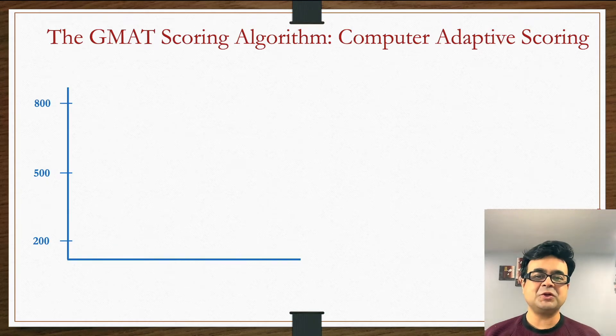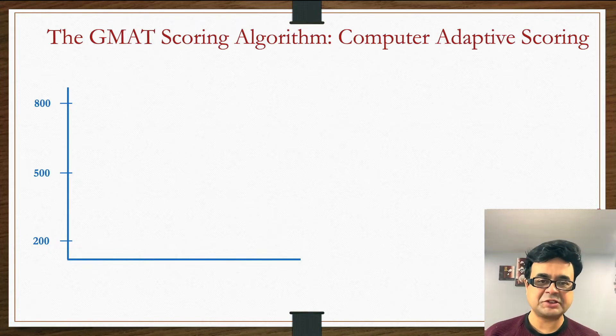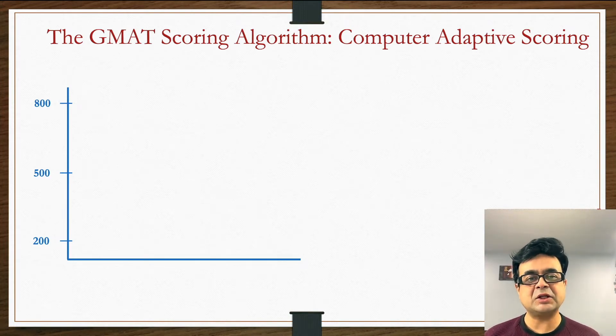Hello everyone. In this video, we're going to talk about how GMAT scores your test. If you've been asking questions like, 'If I get 15 out of 31 questions correct on math, what would be my score?' and nobody has been able to tell you, it's because GMAT's algorithm is computer adaptive.